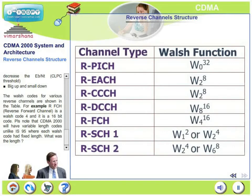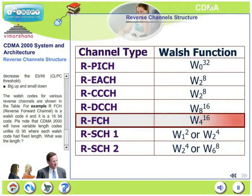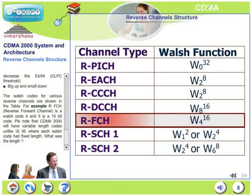The Walsh codes for various reverse channels are shown. For example, the reverse pilot channel uses Walsh code W4 and it is a 16-bit code. Please note that CDMA 2000 uses variable-length codes, unlike IS-95 where each Walsh code had a fixed length.